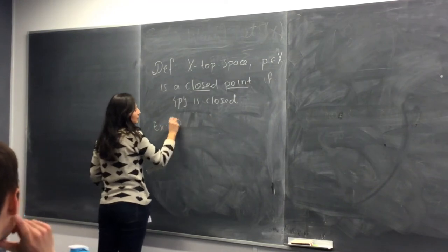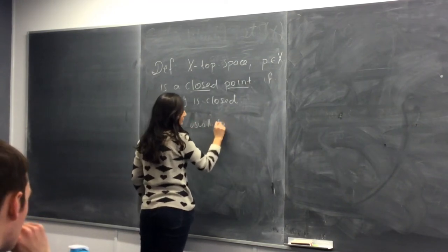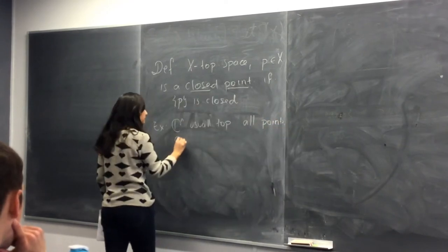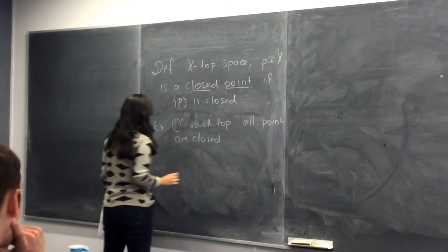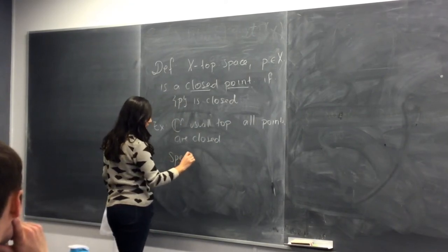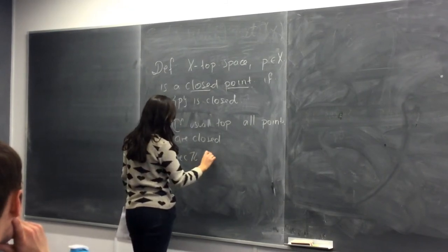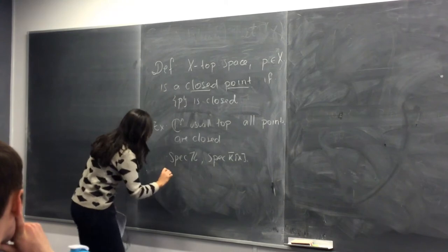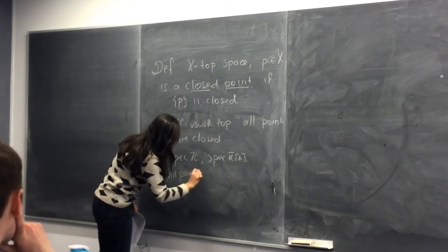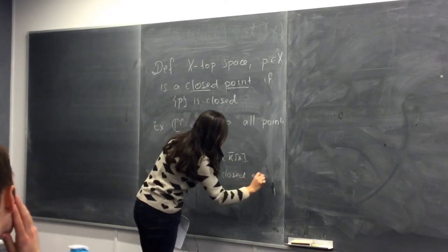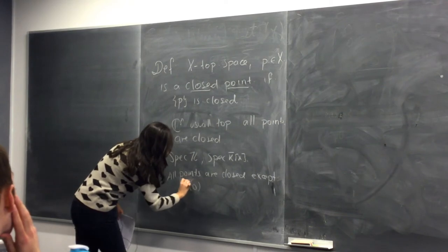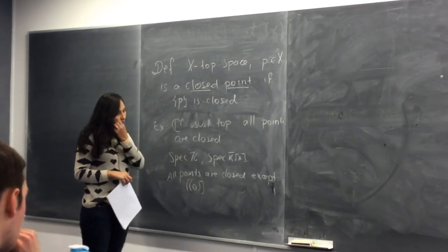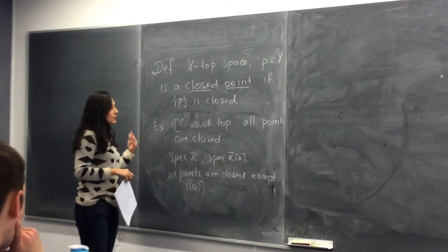So we require that the point itself is closed. In usual topology it means every point is closed — for example if you consider ℂⁿ with the usual topology then all points are closed. If we think now in our schemes, for example Spec(ℤ) and Spec(K[x]) where K is algebraically closed, all points are closed except the zero point, because every closed set containing zero actually contains all the elements in the scheme.